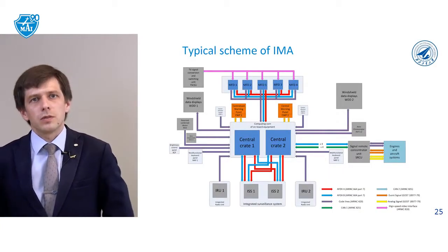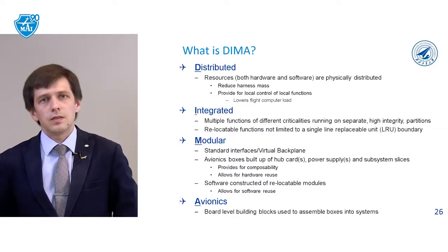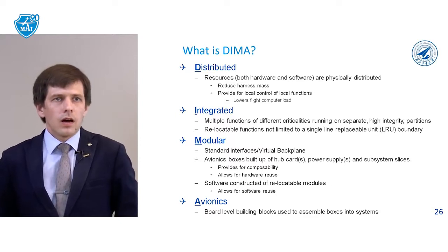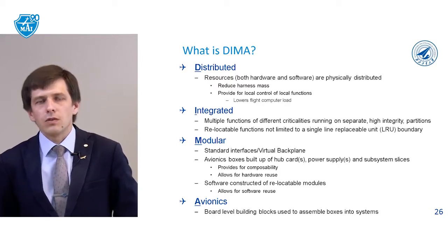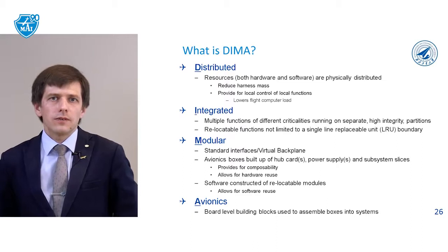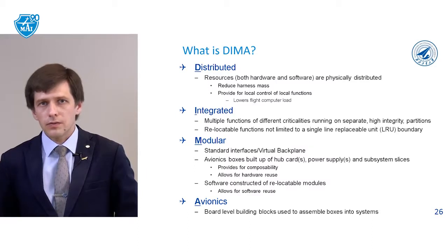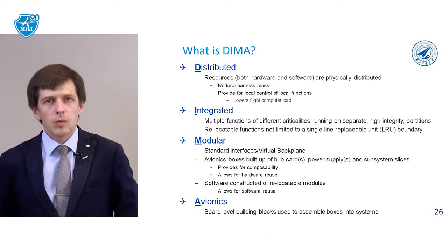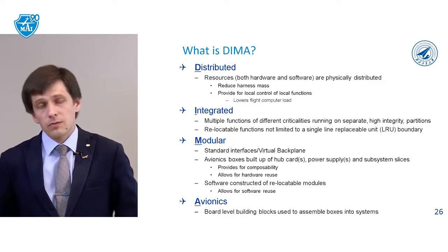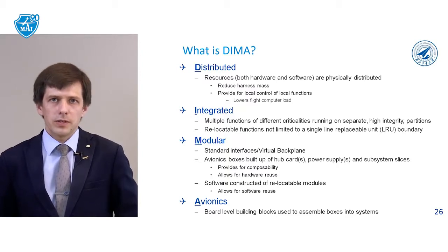A typical diagram of the IMA platform can be found on this slide. Distributed IMA – what is it? It is the new variant of system integration where you have a number of computers in different parts of the aircraft. That's why we don't need to combine all functions into one processor; instead we separate these functions between computers inside the aircraft. If one computer breaks down, another computer can solve the tasks of the failed one.